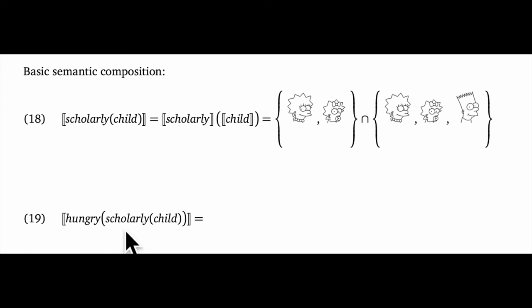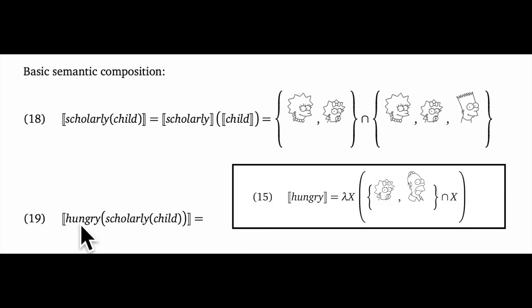Importantly, the result is a set, and that means that other adjectives can modify it. For example, we interpret hungry scholarly child, and this just involves applying the meaning of hungry to the set that we got before. So this will reduce down to just the set containing Maggie.